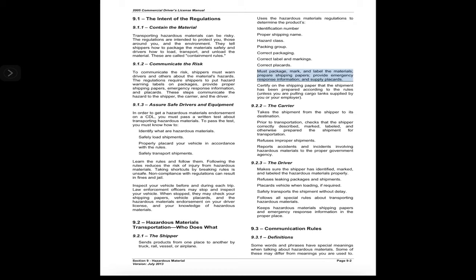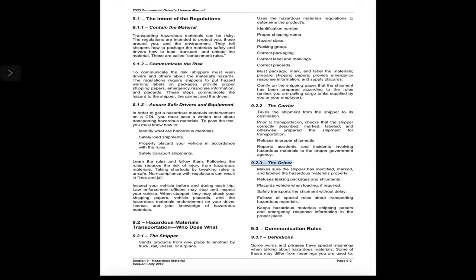The shipper must package, mark, and label the materials; prepare shipping papers; provide emergency response information; supply placards; and certify on the shipping paper that the shipment has been prepared according to the rules. 9.2.2 The Carrier takes the shipment from the shipper to its destination, checks that the shipper correctly described, marked, labeled, and otherwise prepared the shipment, refuses improper shipments, and reports accidents and incidents involving hazardous materials to the proper government agency.